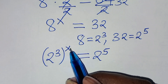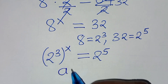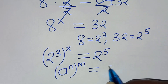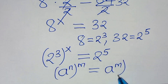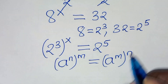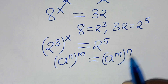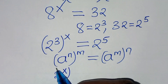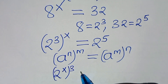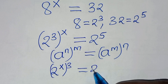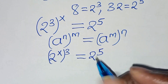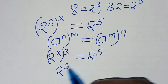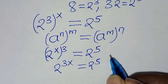2 to the power of 3, raised to the power of x, this is in the form of a to the power n, raised to the power m, which we can express as a to the power of m raised to the power n. Applying this exponent property, this implies we have 2 to the power of x, raised to the power 3, this is equal to 2 to the power of 5. So we can multiply x and 3 here, so that we have 2 to the power of 3x, this is equal to 2 to the power of 5.